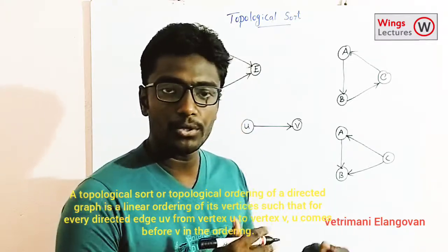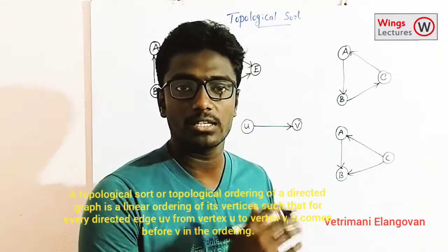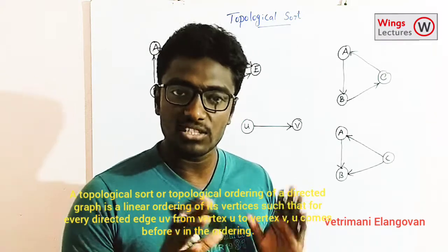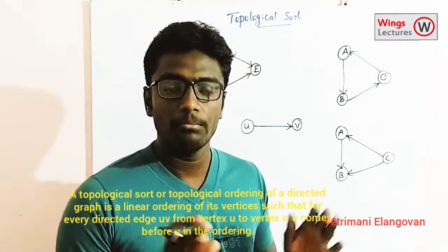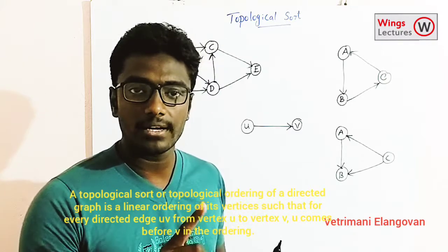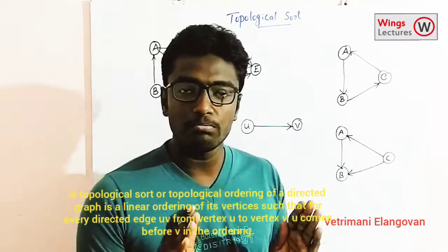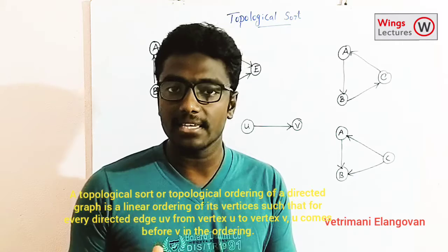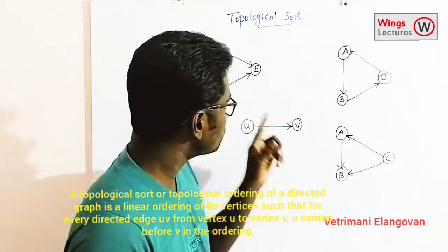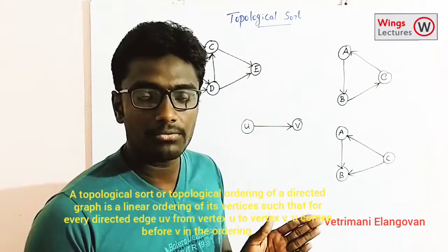From the graph we are going to find out what sequences are available. Before going to start the process, there is a main constraint: the graph should be a directed acyclic graph. It has to be both a directed graph as well as an acyclic graph.